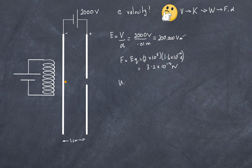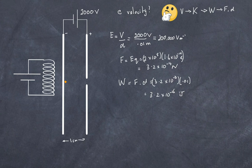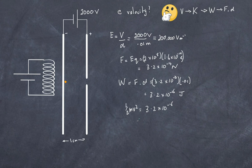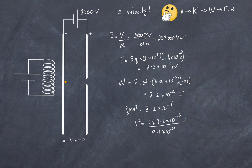Next, work equals force times distance: 3.2×10⁻¹⁴ N × 0.01 m = 3.2×10⁻¹⁶ J. Setting this equal to ½mv² and substituting the electron mass (9.1×10⁻³¹ kg), we solve for velocity: v² = 2 × 3.2×10⁻¹⁶ / 9.1×10⁻³¹, giving v = 2.57×10⁷ m/s.